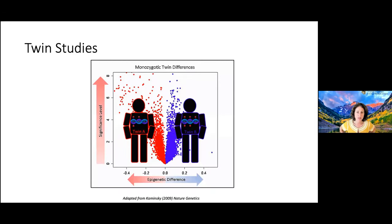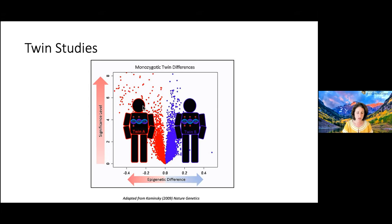Some early work was also done with twin studies. These are very interesting because you can look at monozygotic twins who have the same genetic material. Even in those cases, within a twin pair, you see a lot of epigenetic differences — shown on the x-axis with the level of significance on the y-axis. This demonstrates that methylation marks are inherited but also changing, and even monozygotic twins show differences in these methylation and epigenetic marks.